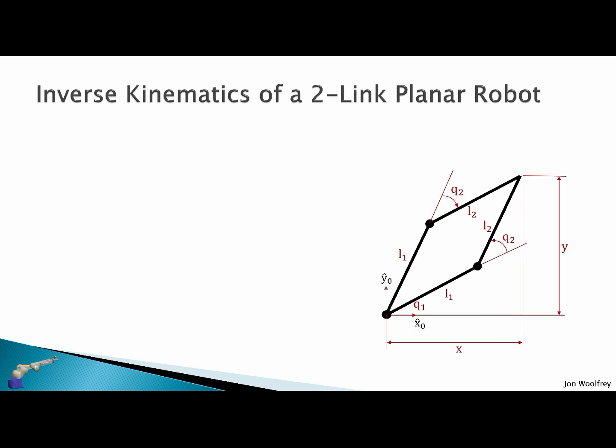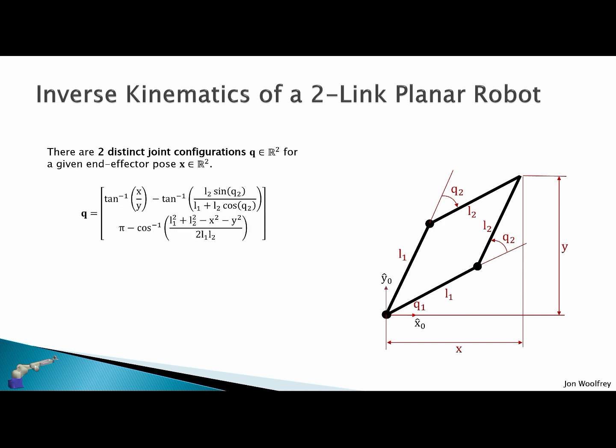From our inverse kinematics we can see that there are two joint configurations Q in two dimensions for a given end effector pose x in two dimensions as I've shown here. So we have either the elbow up or the elbow down. Right, so here's the first solution for the joint angles Q or this second solution here.